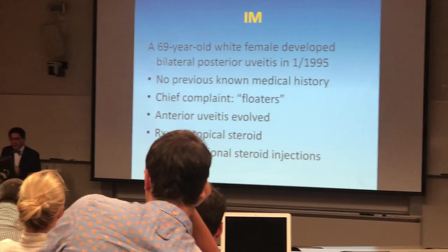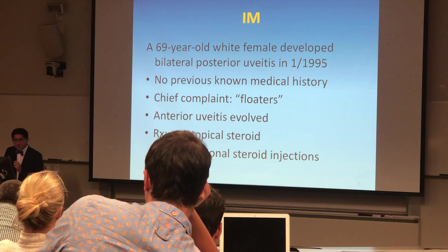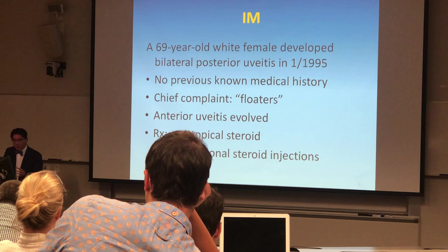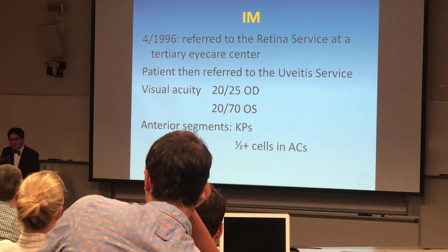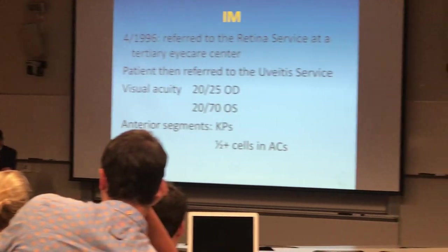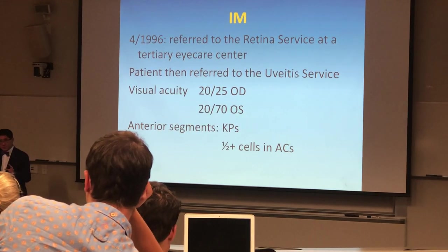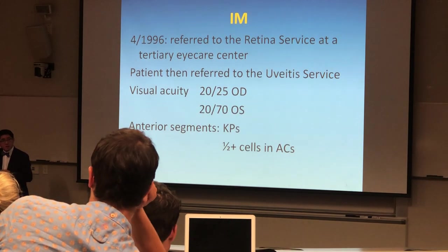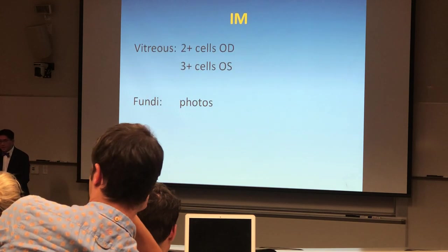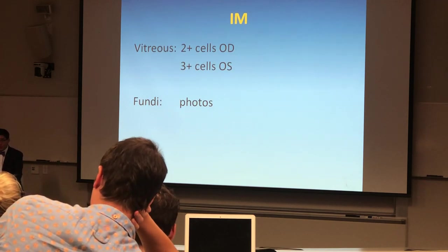This is a 69-year-old white female who developed bilateral posterior uveitis in 1995. No previously known systemic disease was the complaint. The anterior uveitis evolved and was treated with topical steroid and injection, and then was referred to the retina service. The patient had precipitates on the anterior segment, some blood, and a little bit of cell in the anterior chamber. There were 2+ cells in the vitreous of the right eye and 3+ cells in the left.